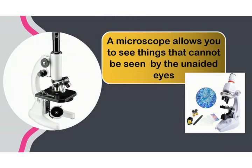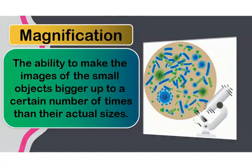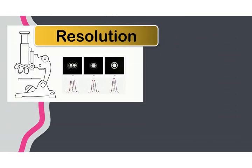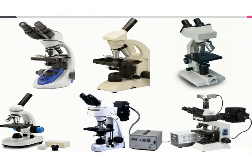This happens due to its properties such as magnification and resolution. What is the difference between magnification and resolution? Magnification is the ability to make the images of small objects bigger, up to a certain number of times their actual sizes. Resolution is the ability to distinguish between parts of a certain object.